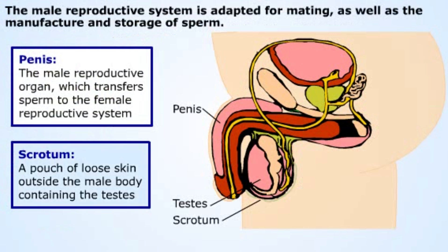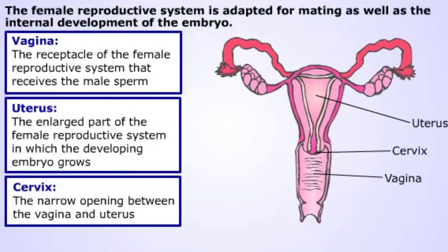The male organ used in mating in vertebrates is the penis. In most males, there are two testes held outside of the body. Unlike animals that fertilize externally, internal fertilization usually requires insertion of the penis inside a receptacle in the female.